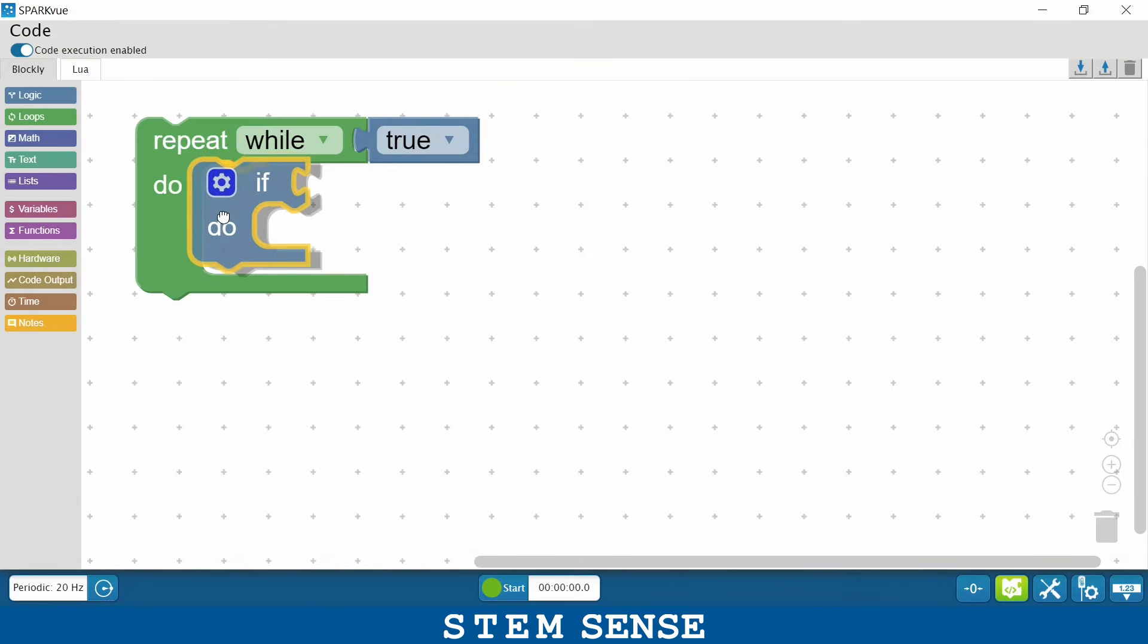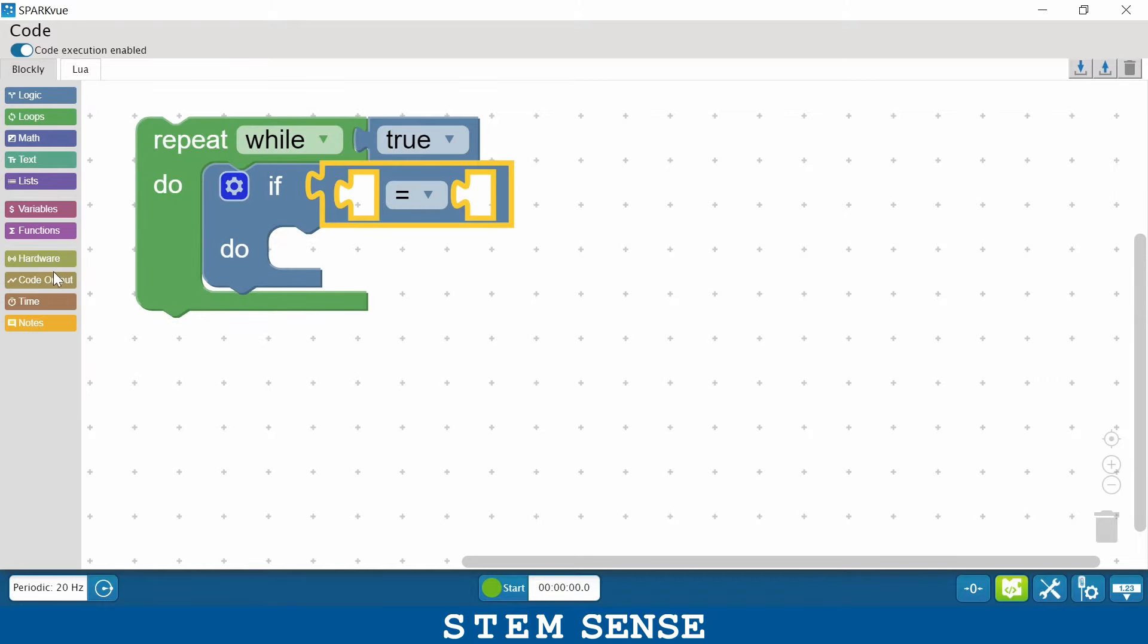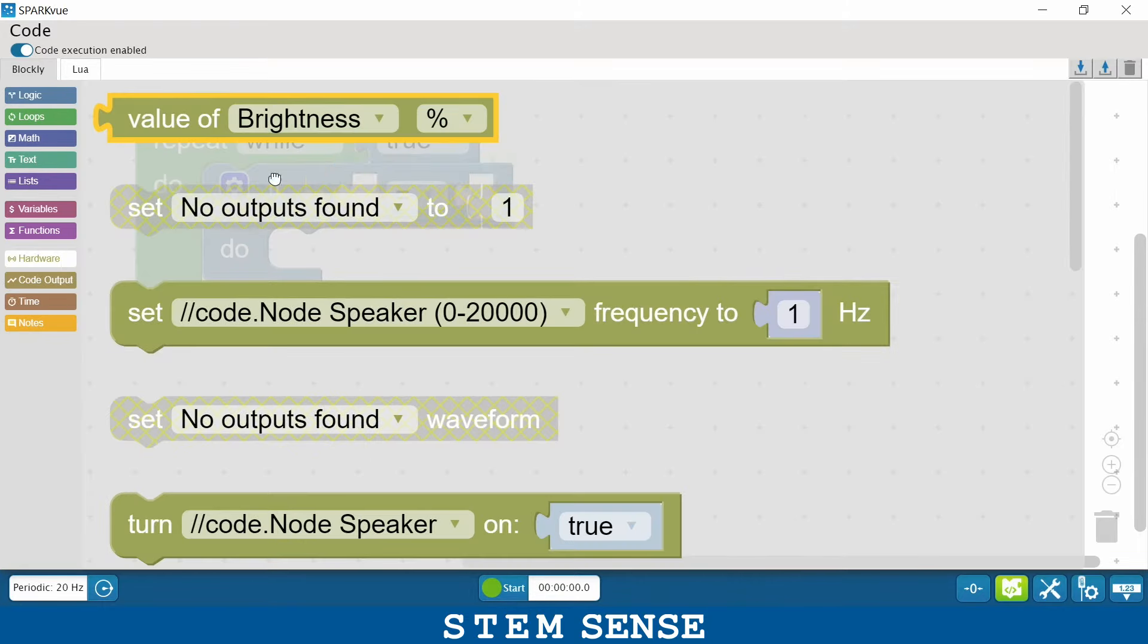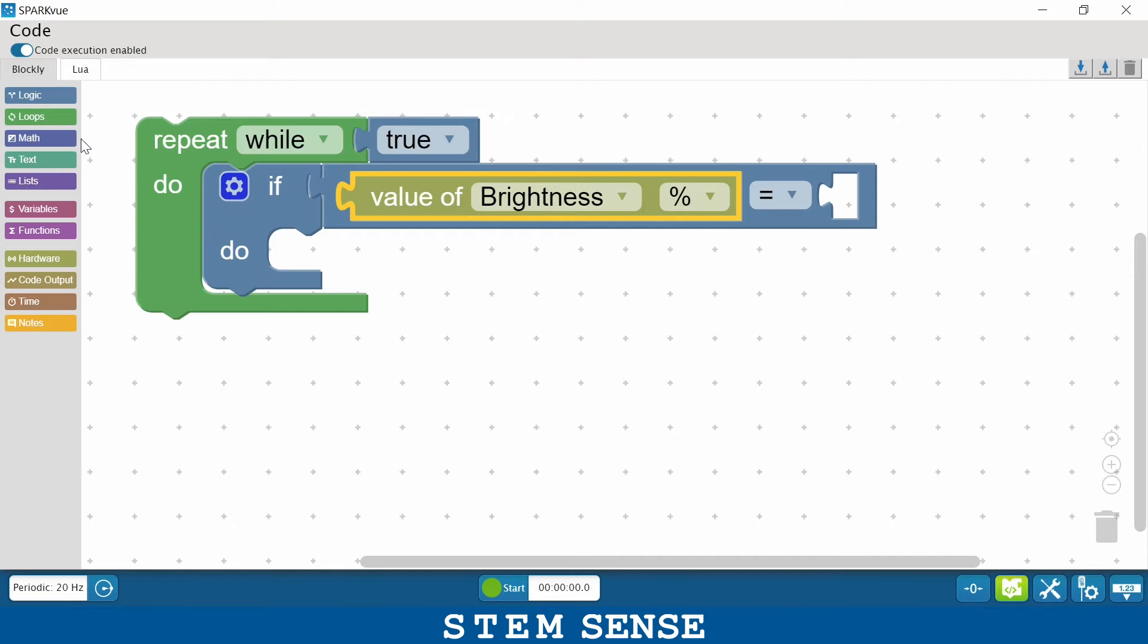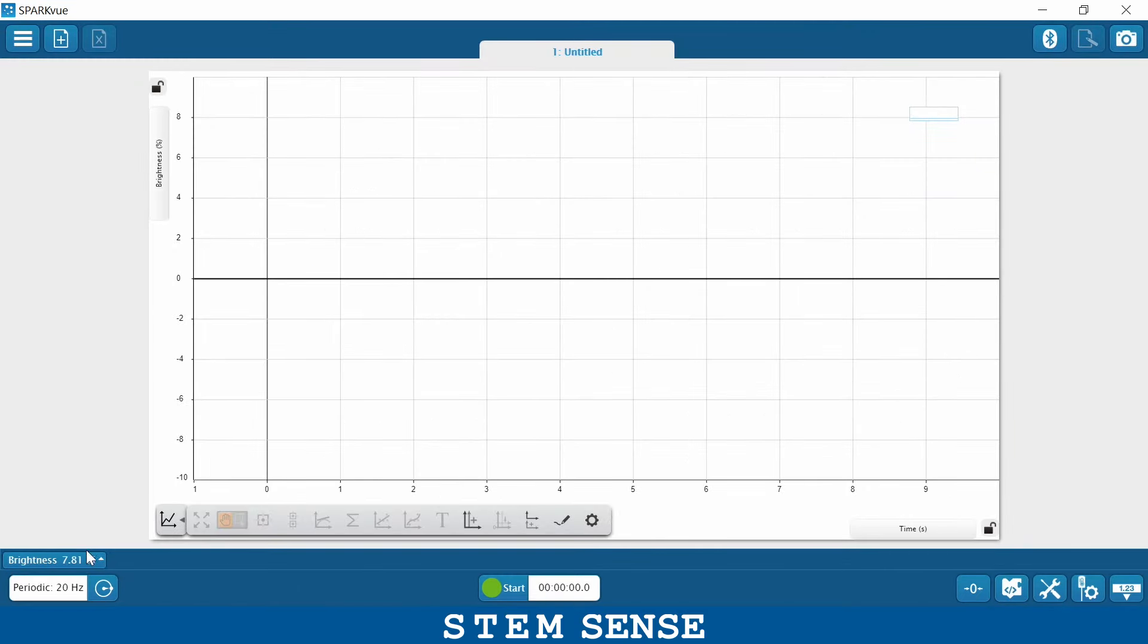I'm going to bring in my conditional statement and a comparison block. And I'm going to say if the value of the brightness, let's see. I'm going to go back here so I can look at my real-time data bar. I'm in a pretty bright room because we're here in the production room, and it's saying it's about 7.81 percent right now.